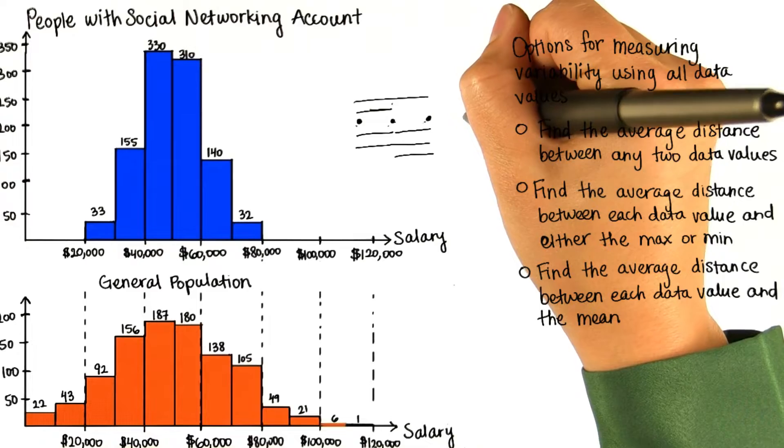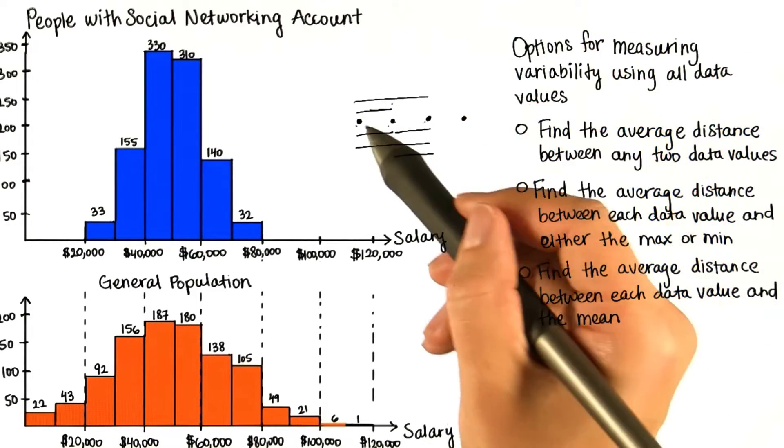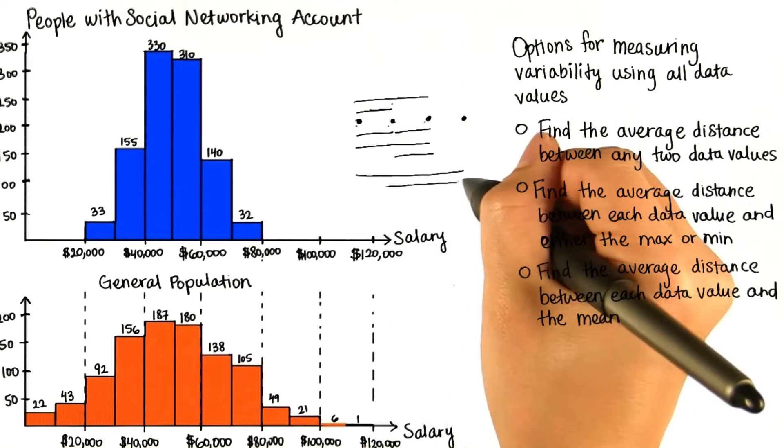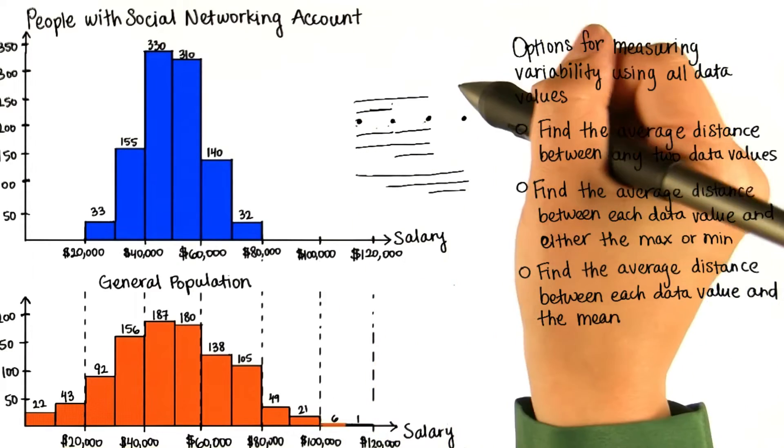Now imagine if we were to add another data point. Then we would calculate six more distances - the distance between this and this, this and this, and those two, and then the distance from this point to all the others.